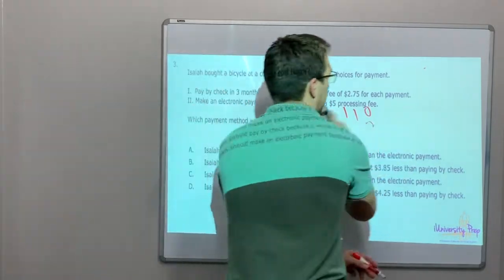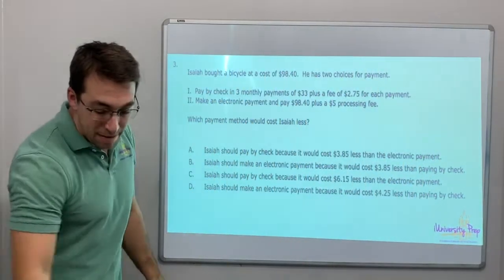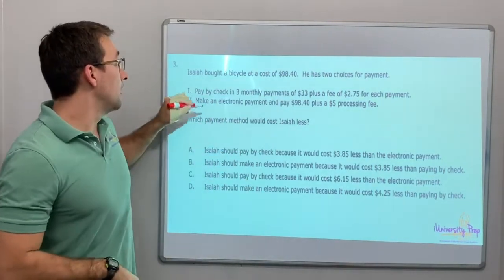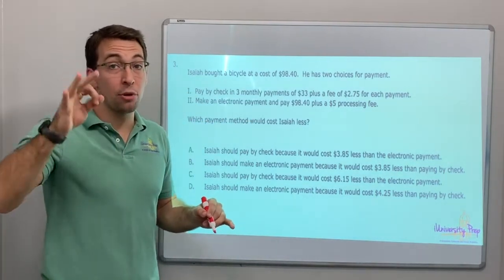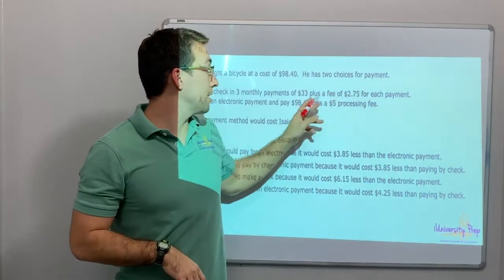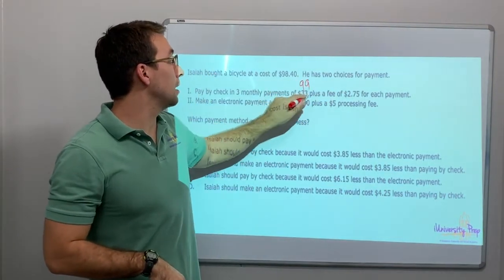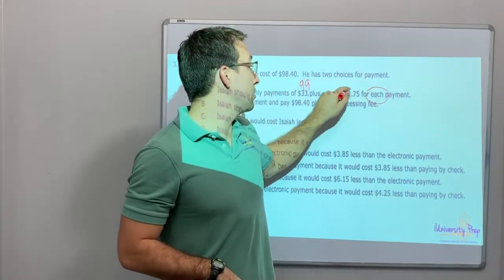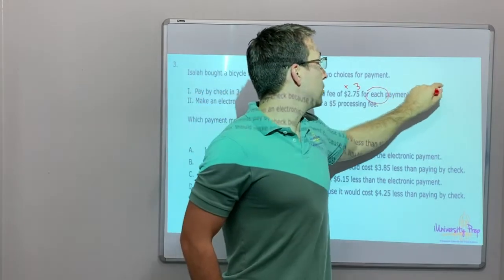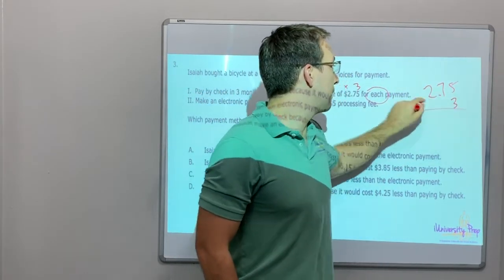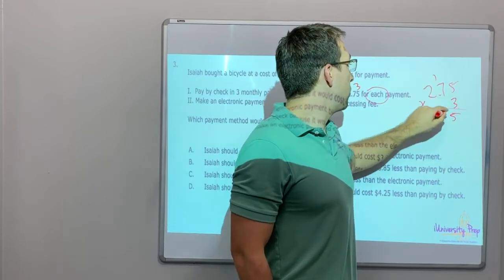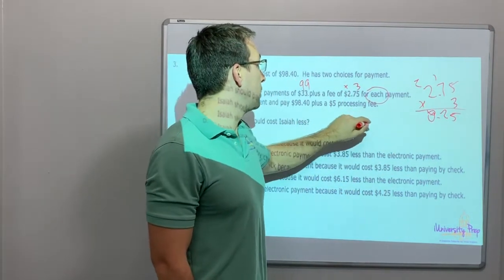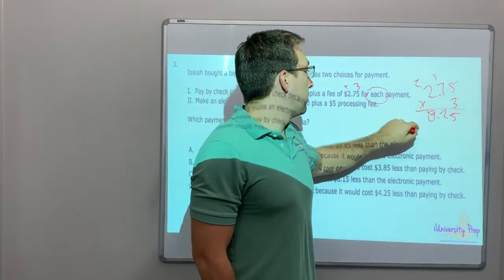Number three: Isaiah bought a bicycle at a cost of $98.40. He has two choices for payment: by check, three monthly payments of $33 plus a fee. So three times 33 is $99 plus $2.75 for each payment, so that's 2.75 times 3 as well.